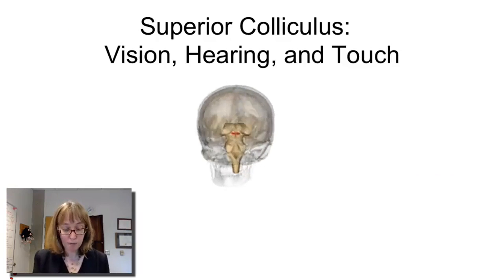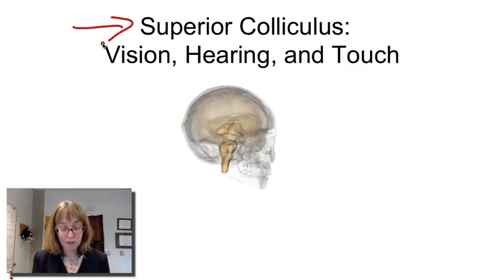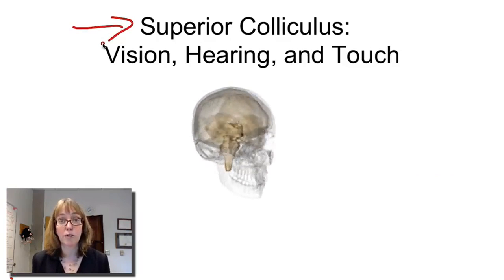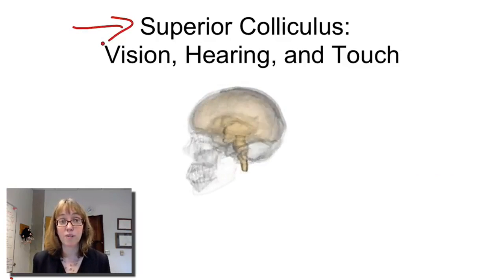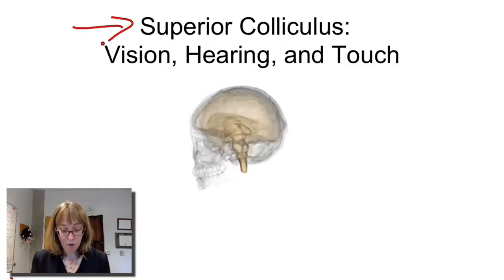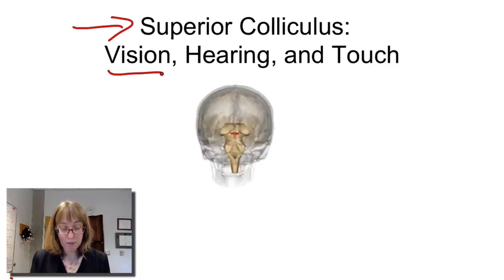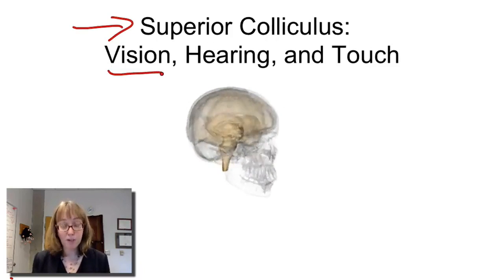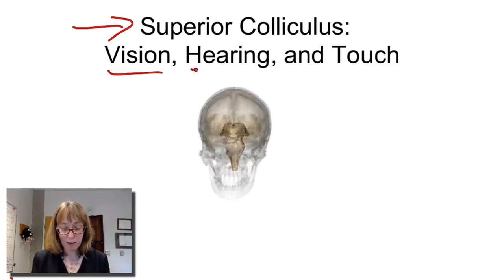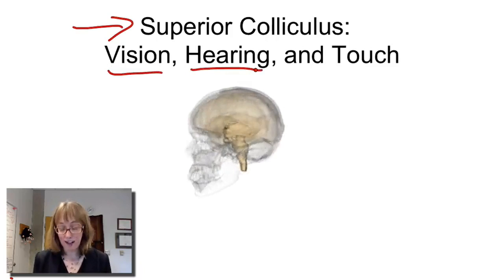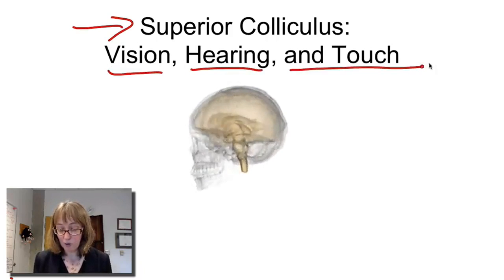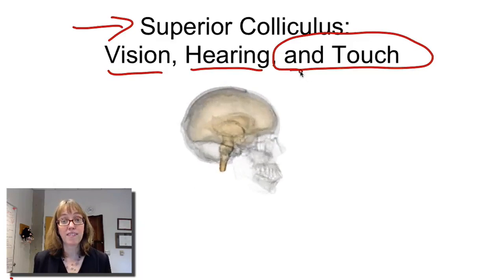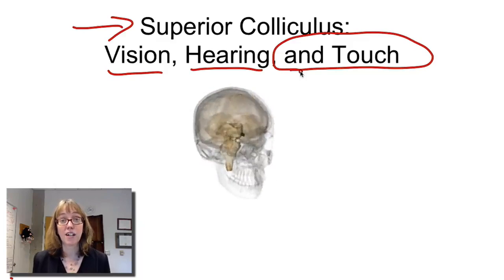I'm going to tell you some more about the superior colliculus, the brain area we've already begun to speak about in several earlier videos. You already know that the superior colliculus plays a role in vision and eye movements, as well as hearing, and today I'm going to tell you more about its role in coordinating between these senses and our sense of touch.